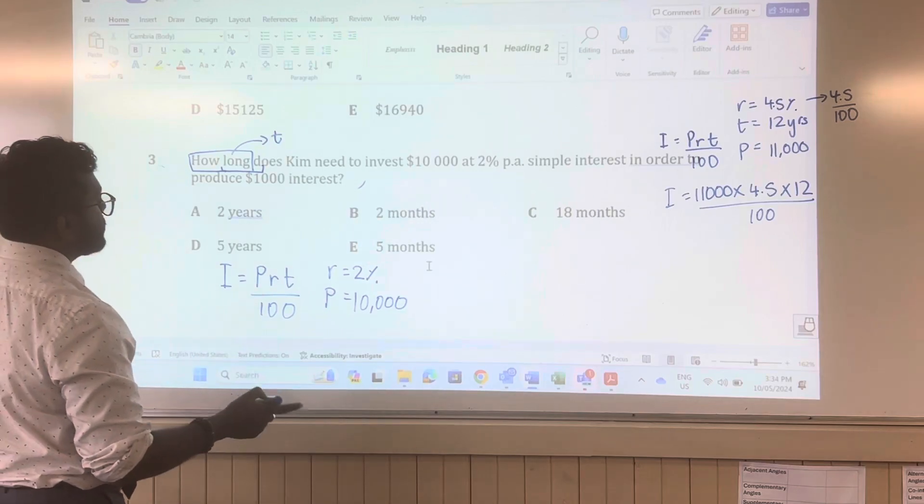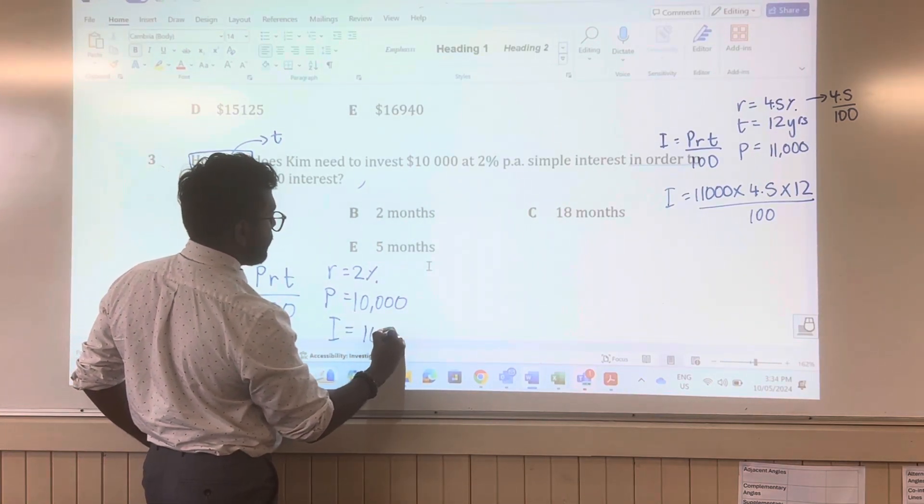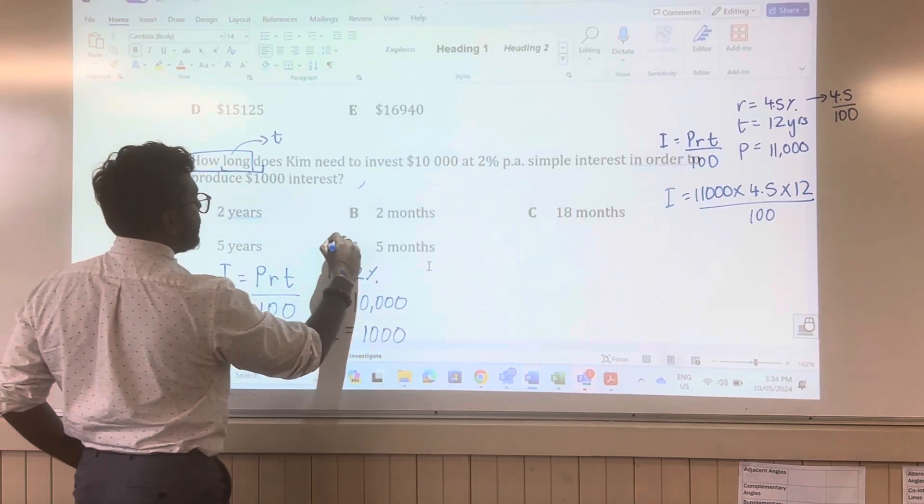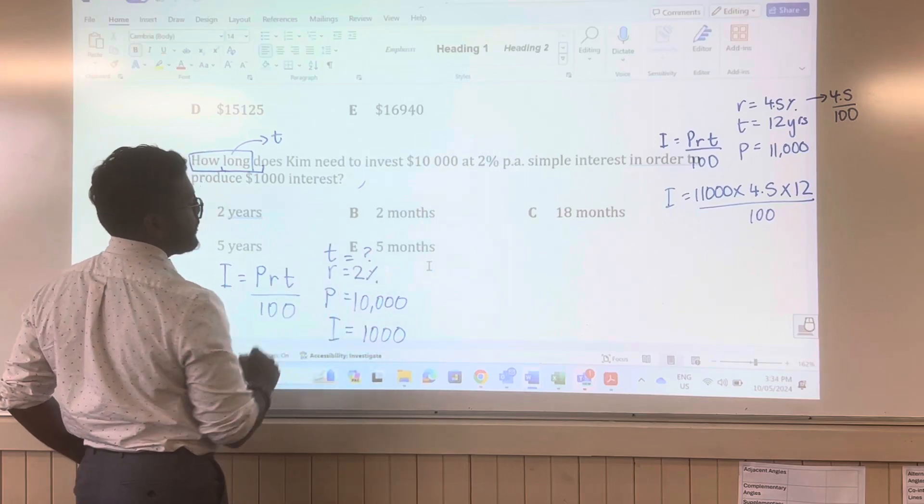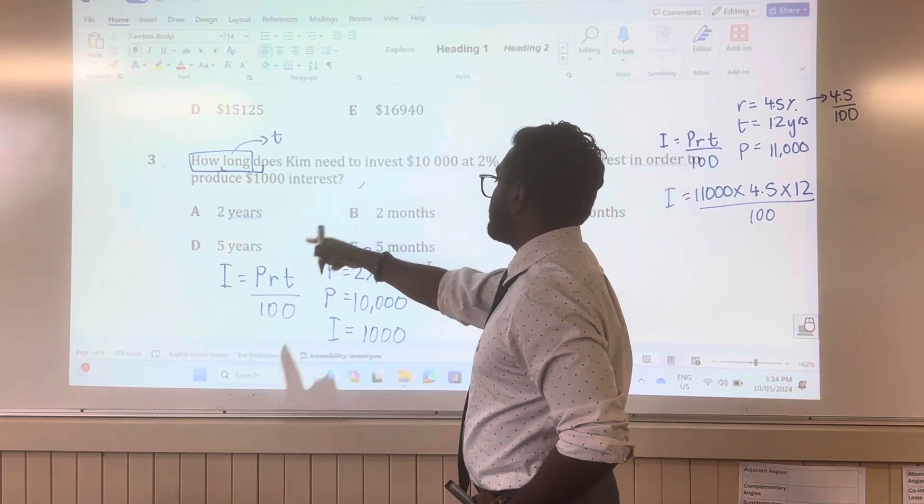And then also to produce an interest, interest is I, of $1,000. What are we trying to find out here? T. I'm going to put a question mark. Next thing is to put our, substitute into our formula.